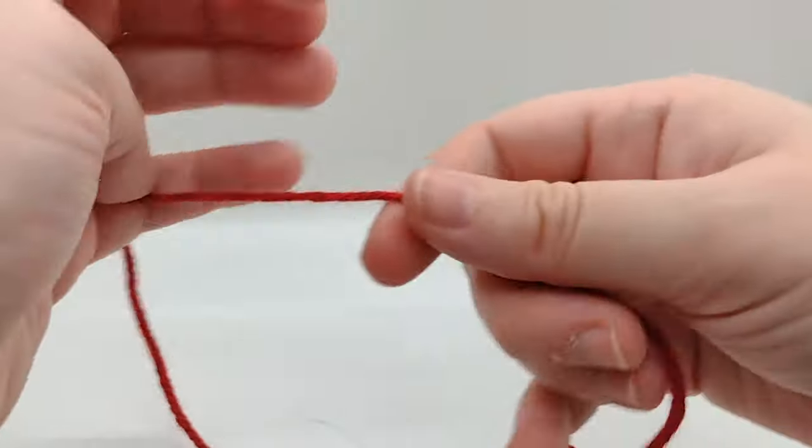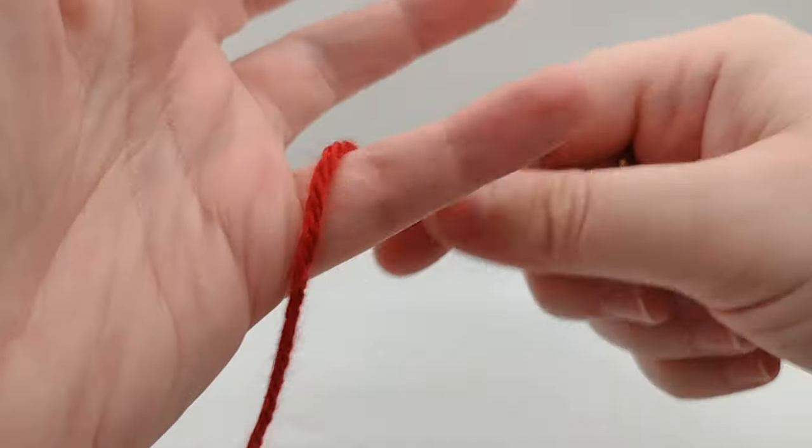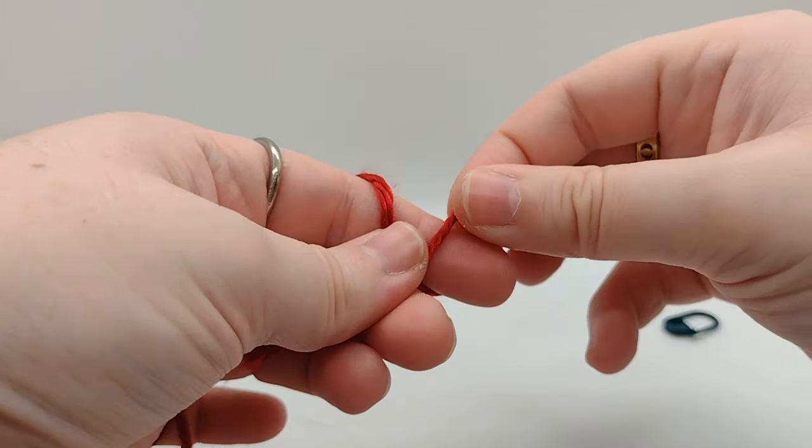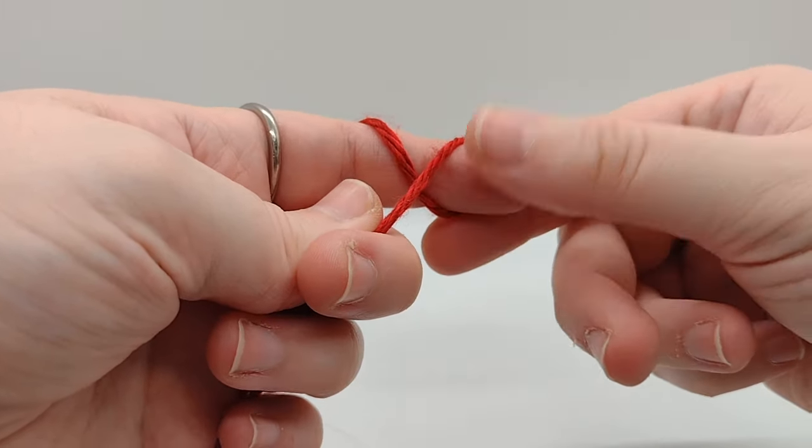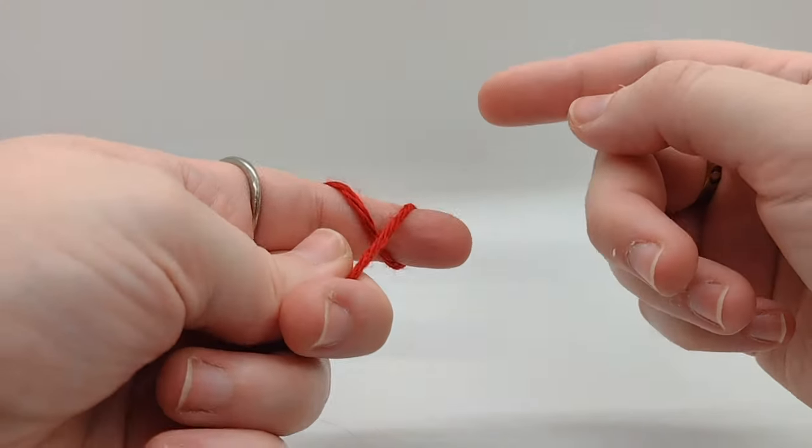But as you saw, let me do that one more time here. Got the end of the yarn here, looping it around twice around my little finger, then one big one around my pointer finger. This is right-handed, but I can flip the video for left-handed, it's the same.